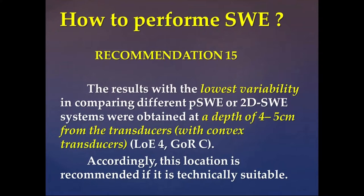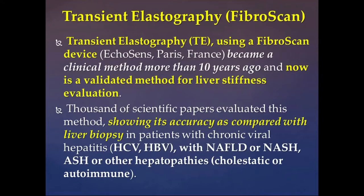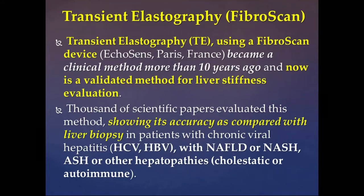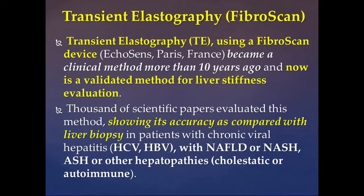Recommendation 15: for reliable measurement with lower variability, place the box at a depth of four or five centimeters from the skin or transducer surface. So we measure four or five centimeters from the skin, and also ensure more than one centimeter below the capsule.